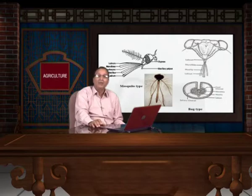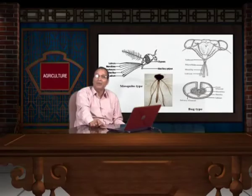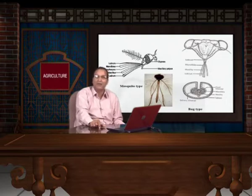Looking at the difference between the piercing and sucking mouthparts of bugs and mosquitoes: in bugs only four stylets are present, whereas in mosquitoes six stylets are present. The two additional stylets in mosquitoes are modifications of the hypopharynx and labrum-epipharynx, which are modified into needle-like stylet structures, as shown in the figures on screen.